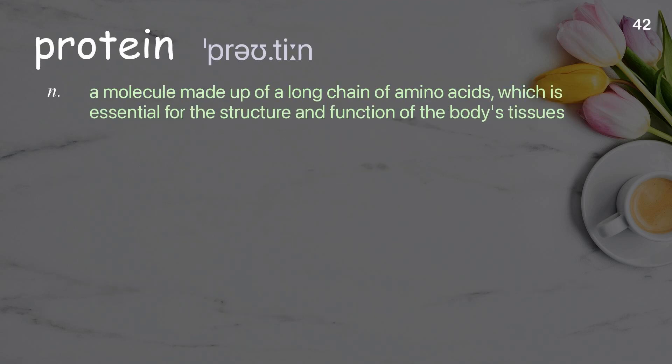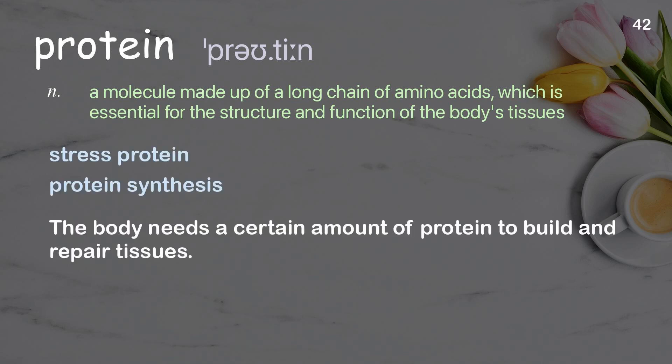Protein: a molecule made up of a long chain of amino acids, which is essential for the structure and function of the body's tissues. Examples: stress protein, protein synthesis. The body needs a certain amount of protein to build and repair tissues.